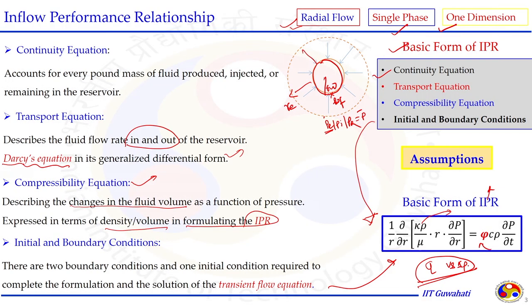To solve this equation and get the IPR relationship — which is the relationship between flow rate and pressure drawdown — we need initial and boundary conditions. There are two boundary conditions and one initial condition required when solving the most complex part: the transient flow condition. We can solve it for steady state, pseudo steady state, and unsteady state cases. The assumptions taken should be listed out when establishing the conservation of mass equation.